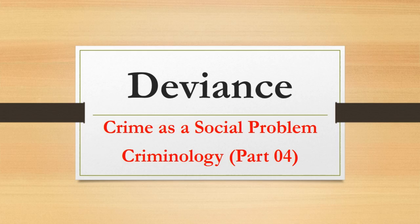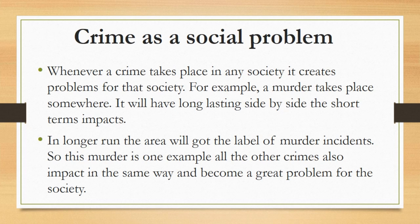First of all, crime as a social problem. Crime always takes place in a society, so whenever a crime takes place in any society it creates problems for that particular society. For example, a murder takes place somewhere — it will have both short-term and long-lasting impacts. Just after the incident it will create a chaotic situation in the surroundings. Police will reach and start investigating the incident, and all the processes after it will put a psychological impact on residents also.